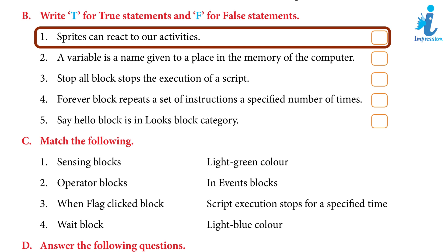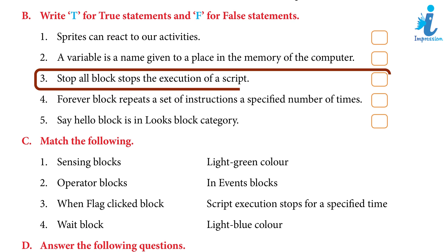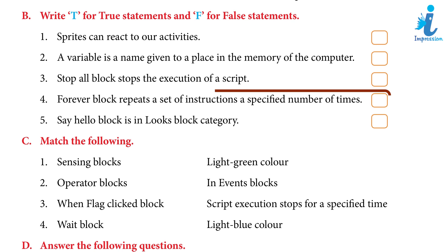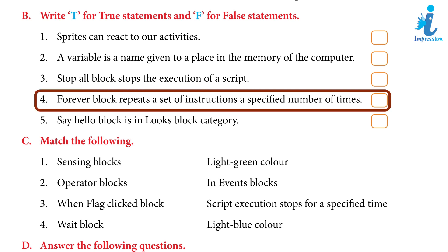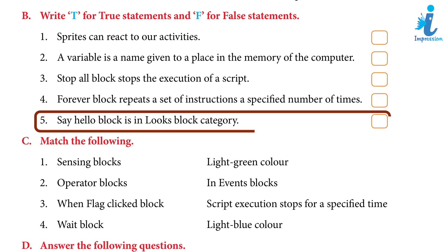True or False: One, sprites can react to our activities — True. Two, a variable is a name given to a place in the memory of the computer — True. Three, stop all blocks stop the execution of a script — False. Four, forever block repeats a set of instructions a specified number of times — True. Five, say hello block is in look block category — False.